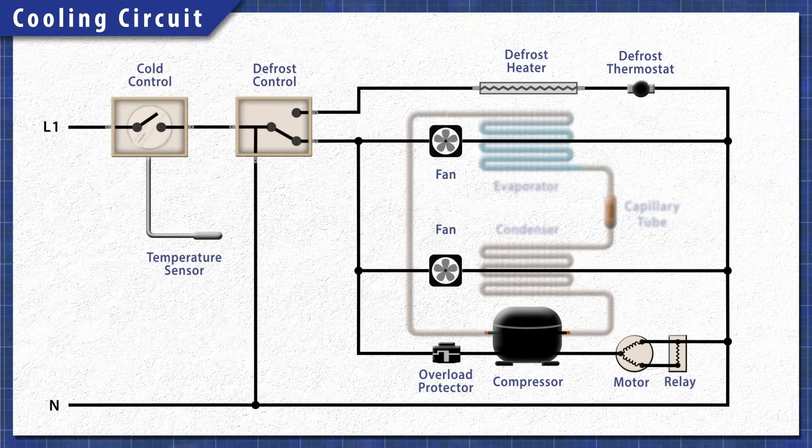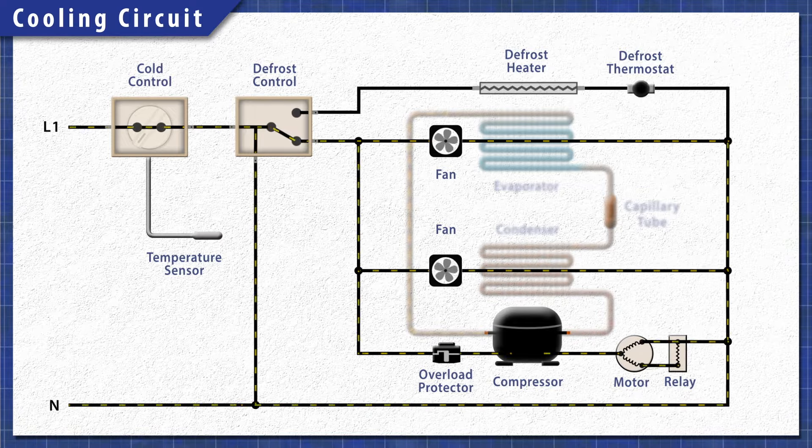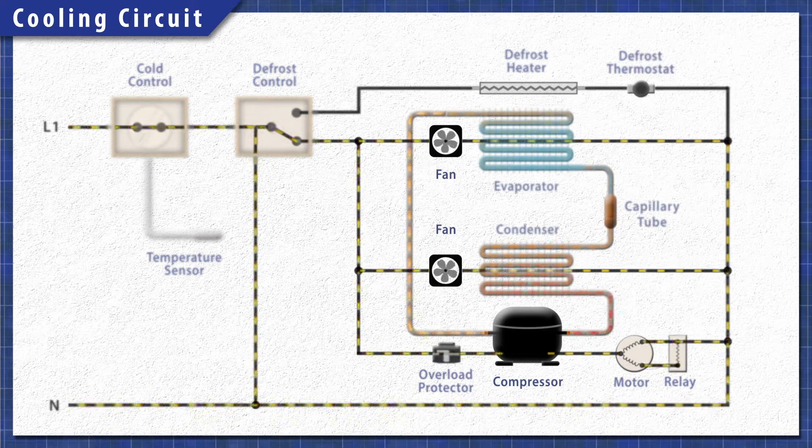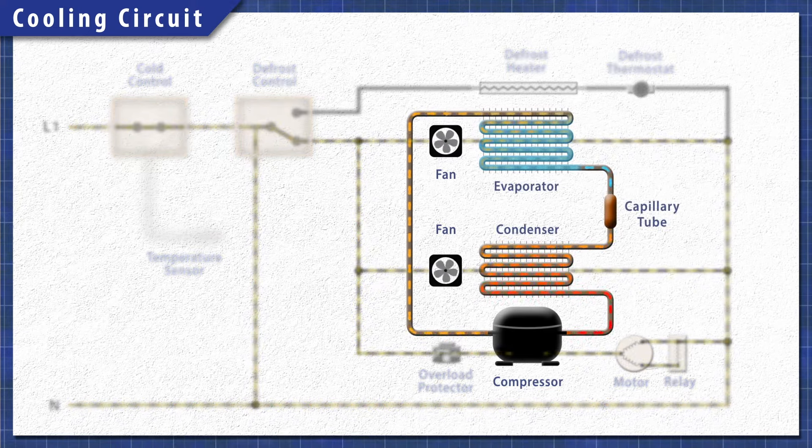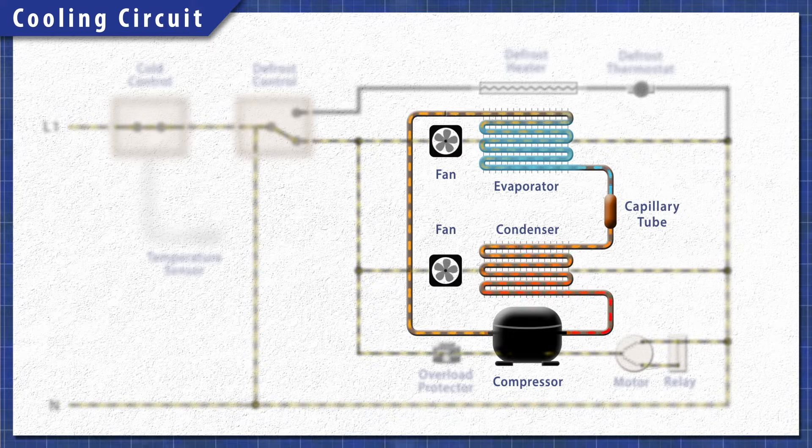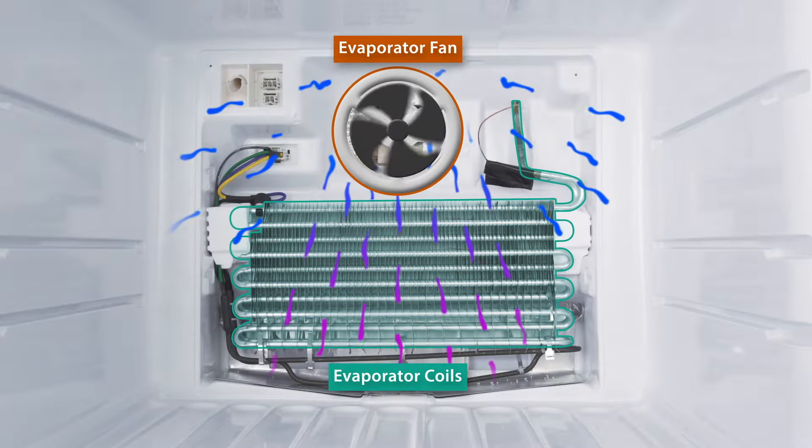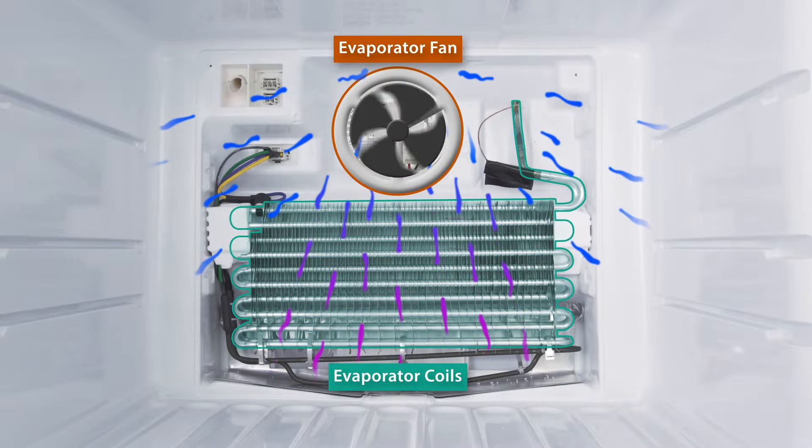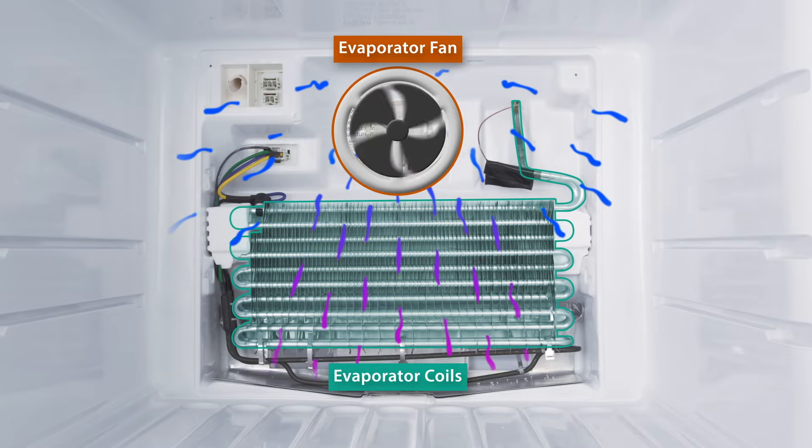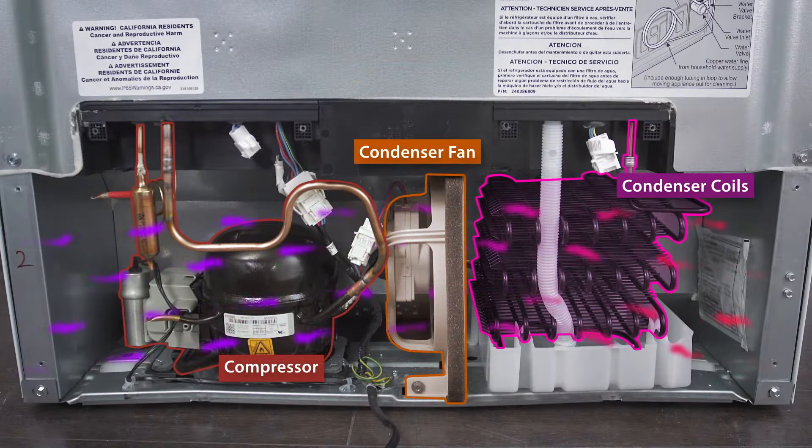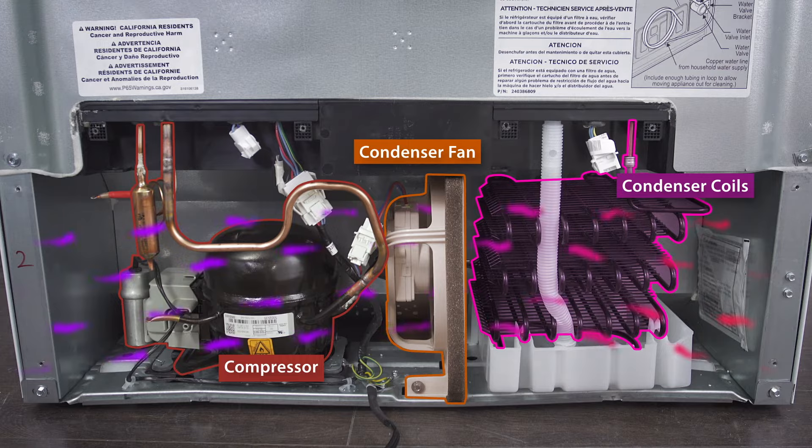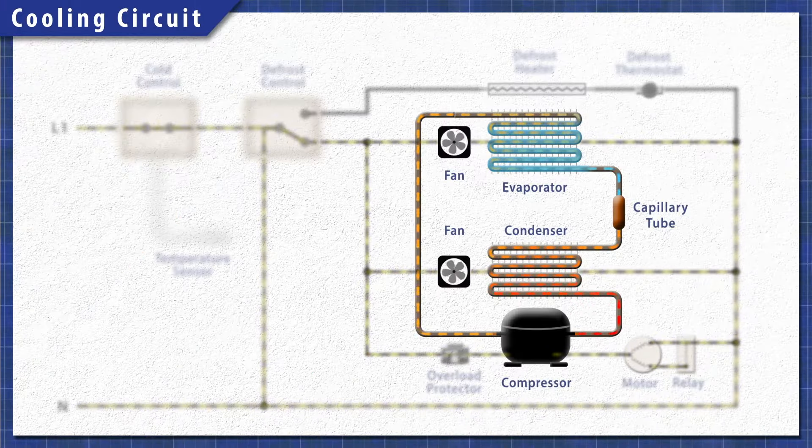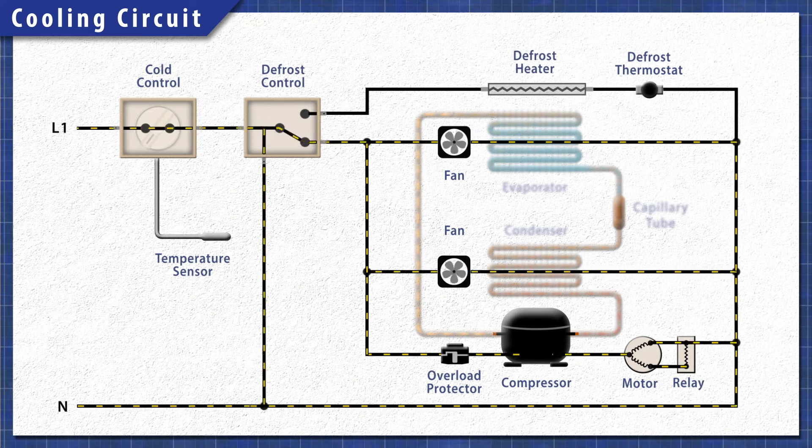All refrigerators work in the same basic way. When cooling is needed, the cold control sends power to the cooling circuit. The compressor pushes the refrigerant through the system. In the freezer, heat is extracted by the evaporator coils and is released through the condenser coils behind the refrigerator. This process continues until the set temperature is reached.